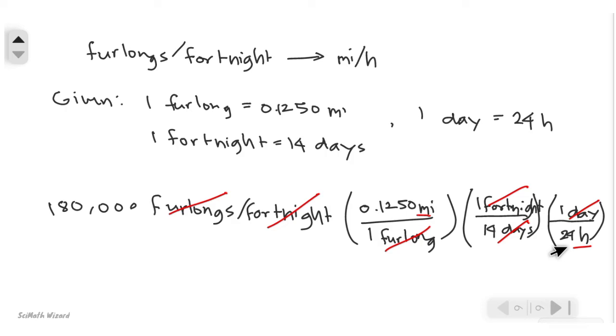So multiplying the remaining values, we should get a value of 67 miles per hour. So 180,000 furlongs per fortnight is equal to 67 miles per hour. And this is our final answer.